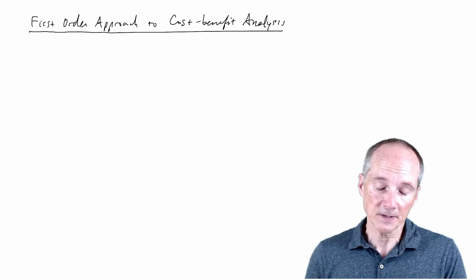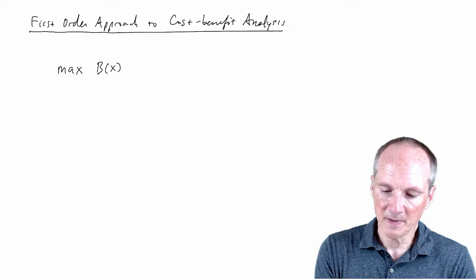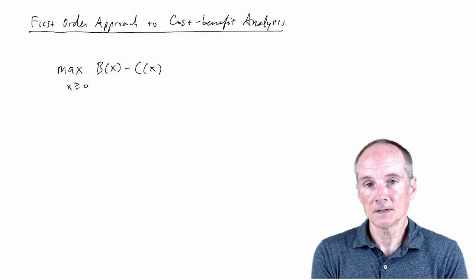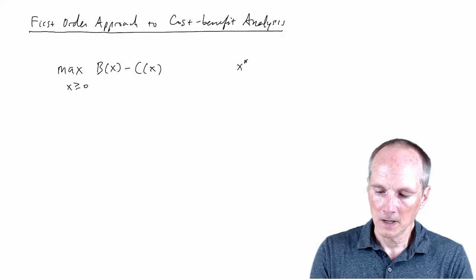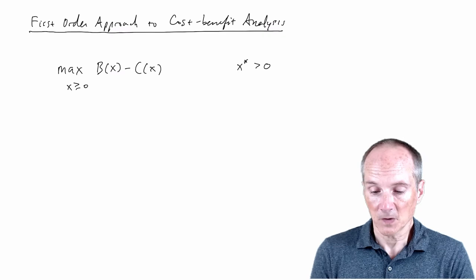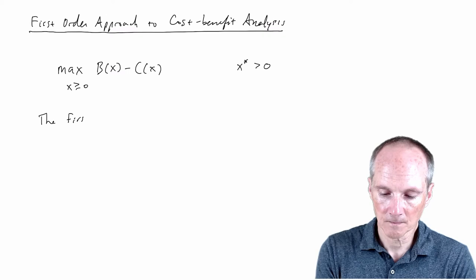Where we ended up was we imposed structure on the model that told us: if we're thinking about this optimization problem of maximizing net benefit with respect to some scale x, under the conditions we have, we know that there is a solution, it's unique. We're calling it x-star, and we also know that it's positive. We're imposing differentiability, so just from basic calculus, we know that at this solution, because it's interior — it's not equal to zero — we know this first-order condition must hold.